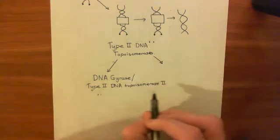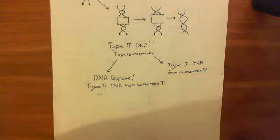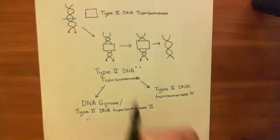This is the classical target of fluoroquinolones in classical textbooks. But another target has also been recently found, which is the type 2 DNA topoisomerase 4 enzyme. So the fourth member of this superfamily of topoisomerases. Both of these enzymes work in exactly the way that I have shown you here.